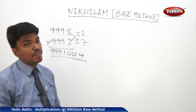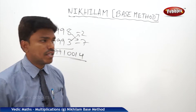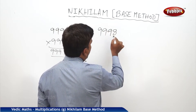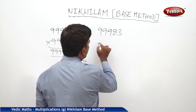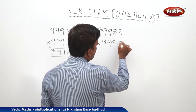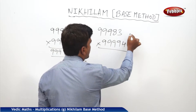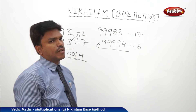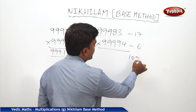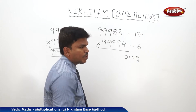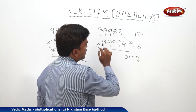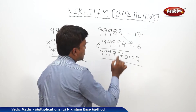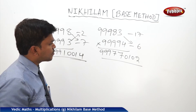One more example: 99983 into 99994. It is minus 17 and minus 6. 17 times 6 is 102, but with four zeros in the base it becomes 0102. Cross subtraction: 99983 minus 6 gives 99977. So the answer is 99977, 0102.